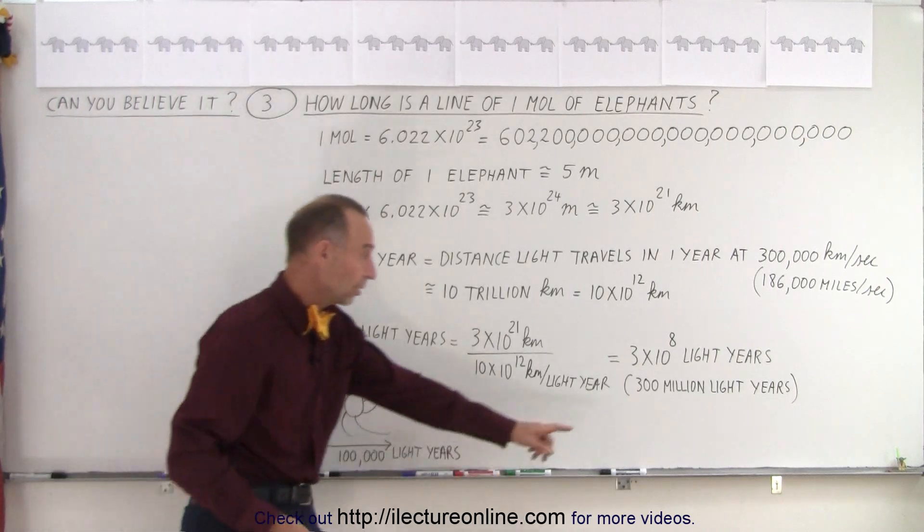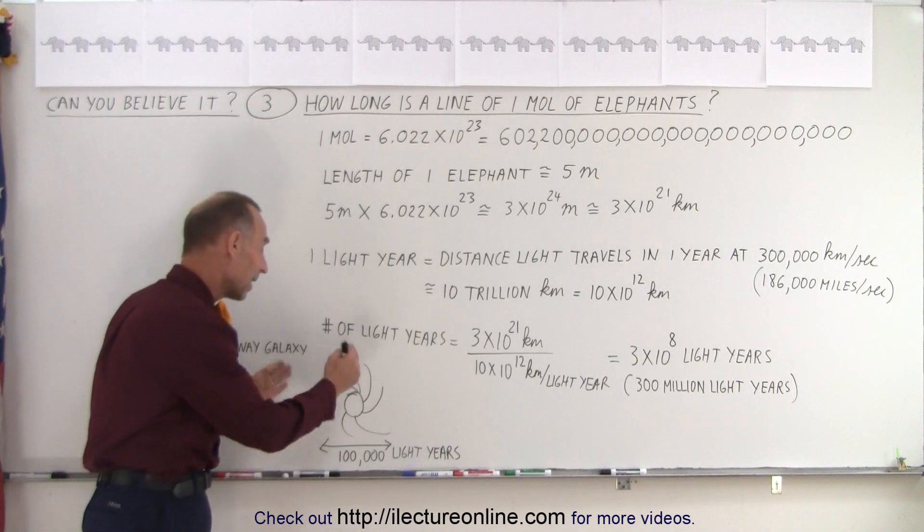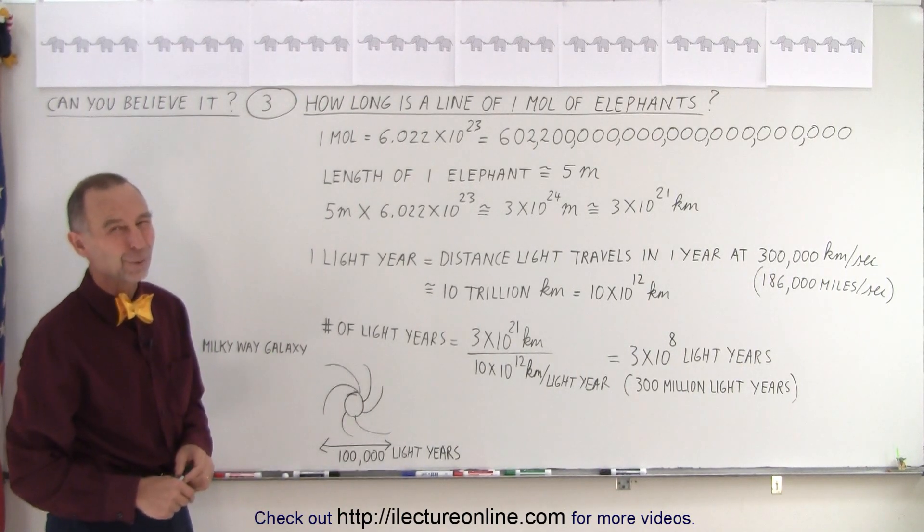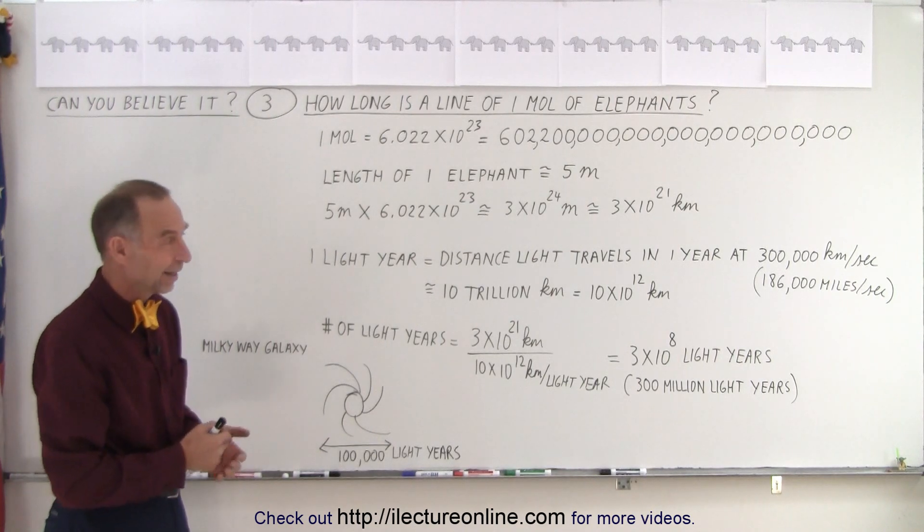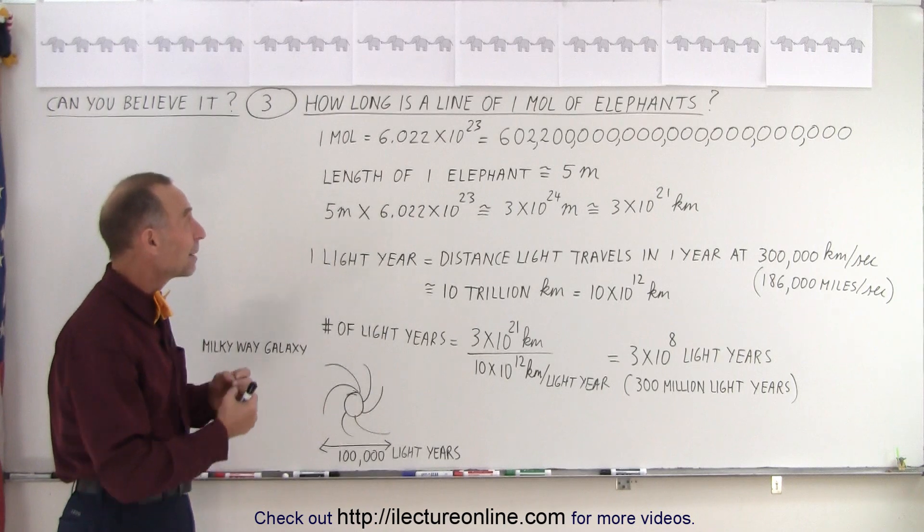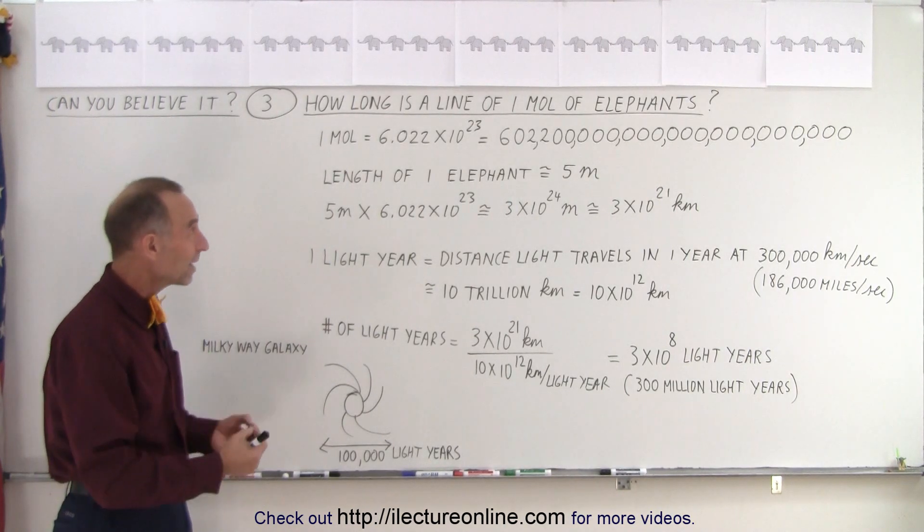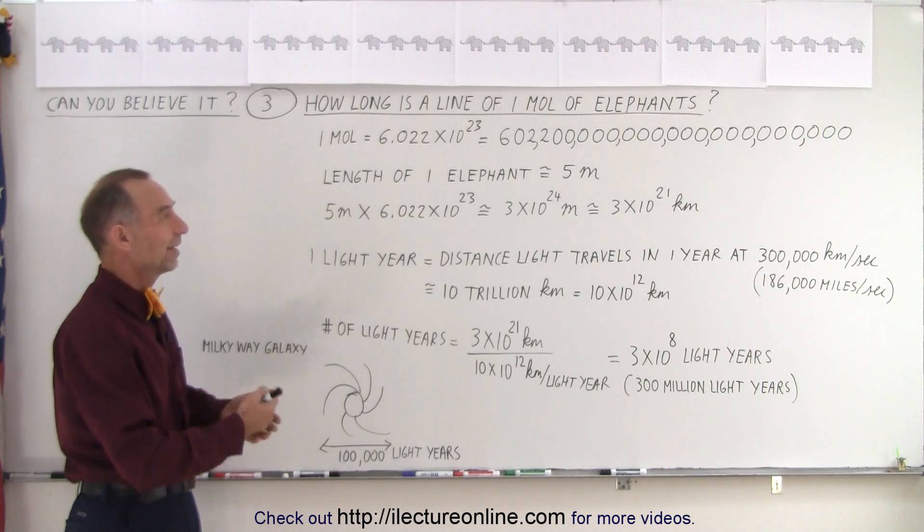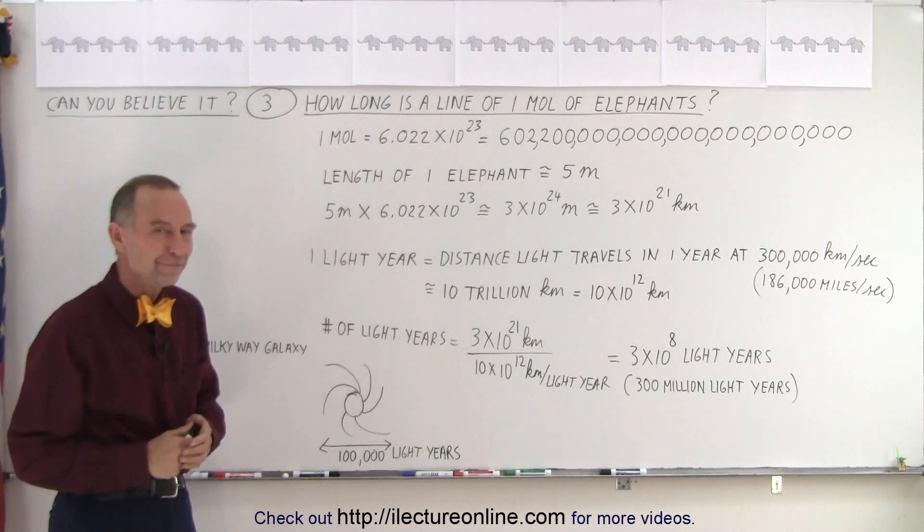Well, 300 million light years would be 3000 times the diameter of our galaxy. 3000 galaxy diameters like our own Milky Way galaxy. It's an enormous line, again, accentuating that a mole of anything, even a mole of atoms, a mole of eggs, a mole of elephants, is a vast quantity that would stretch almost out to infinity.